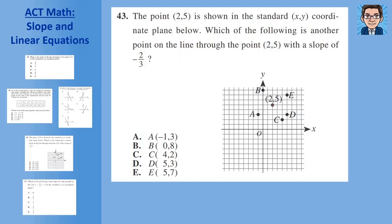Problem 4: Given the point two comma five and a slope of negative two-thirds, which is another point on the line? Apply the slope: go down two and over three from the known point. You can also go up two and to the left three. The line passes through three points, and choice D is on the line — it's exactly down two and over three from the point two comma five. So D is the answer.